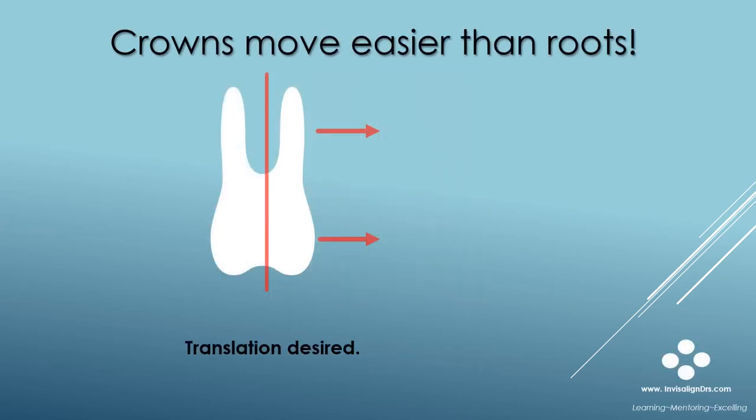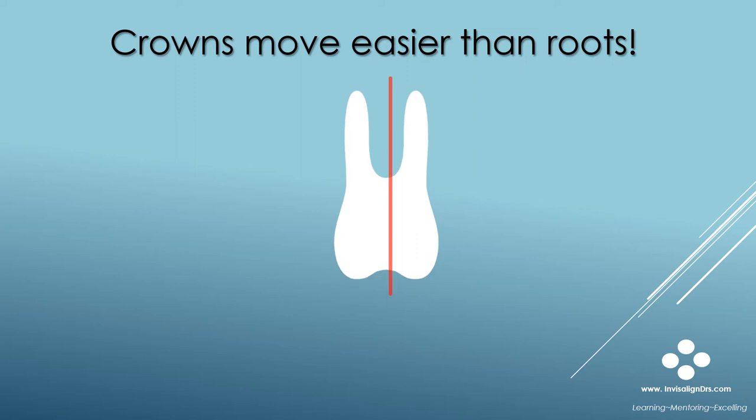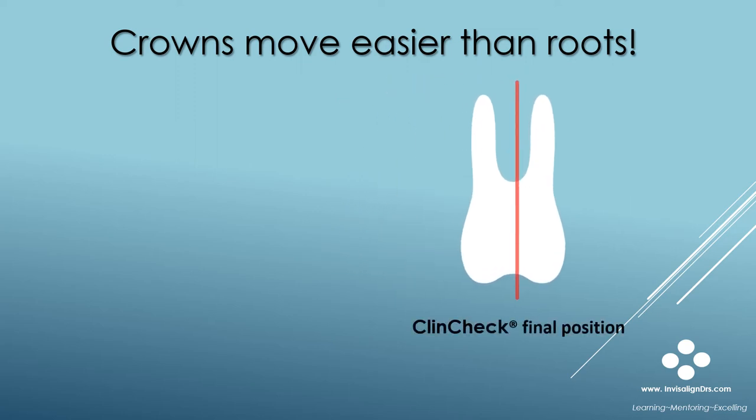Here's a situation where translation is programmed into ClinCheck for arch expansion. Note that both the crown and the root apices are moved together. The buccal-lingual inclination does not change. This represents the final position as seen in ClinCheck.